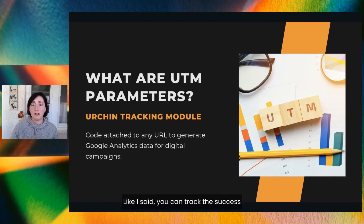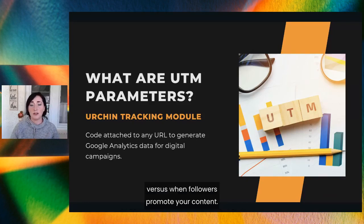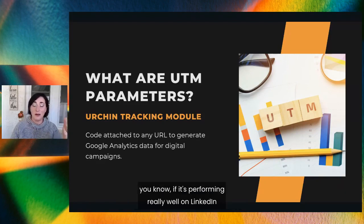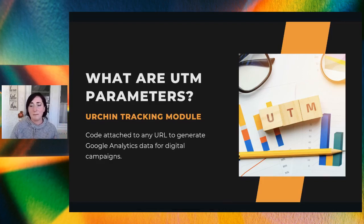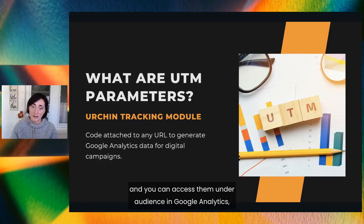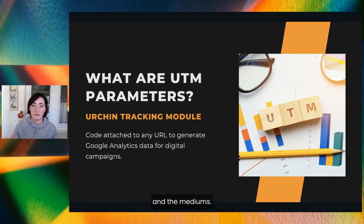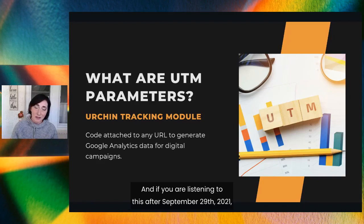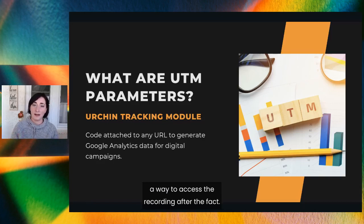Here's how you can use UTMs: you can track the success of certain marketing initiatives, see how well certain social channels promote your content versus when followers promote your content, and track the same piece of content across multiple marketing channels — really helpful to see if something is performing well on LinkedIn but not so hot on Facebook, Instagram, or Twitter. If you have Google Analytics, it will automatically track incoming campaigns. Go to Audience, then Sources, then Campaigns, and click on each campaign to view the source and mediums. If you're listening after September 29th, 2021, the URL posted below will include a way to access the recording after the fact.